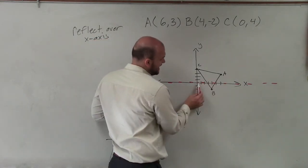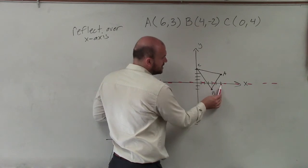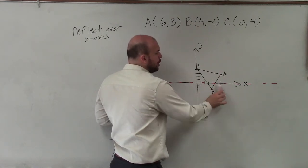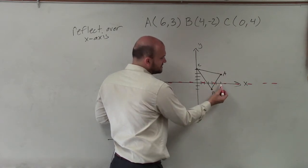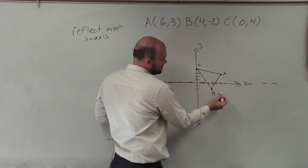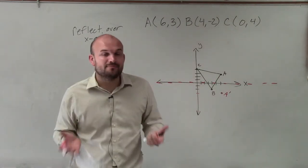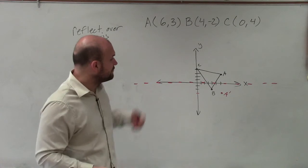is let's look at point A. Point A is over 6, up 3. If I want to reflect this over, instead of going over 6, up 3, I'm going to go over 6, down 3. And then now I can write in my new image point for A prime.